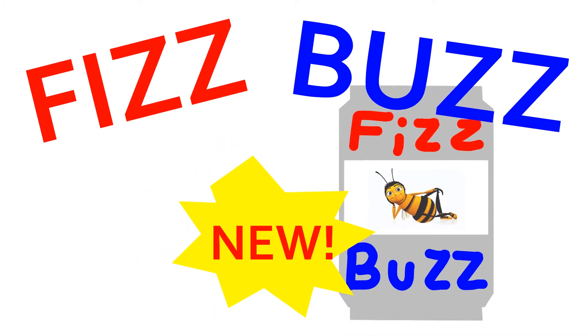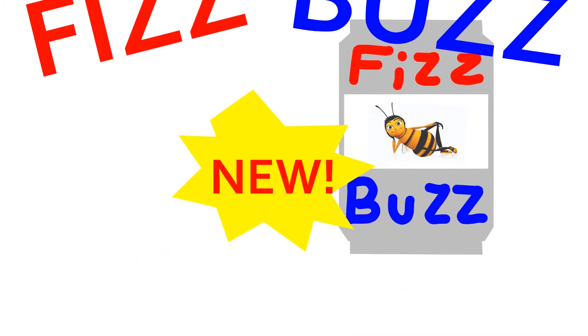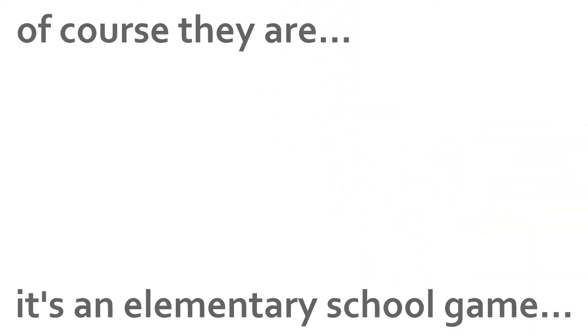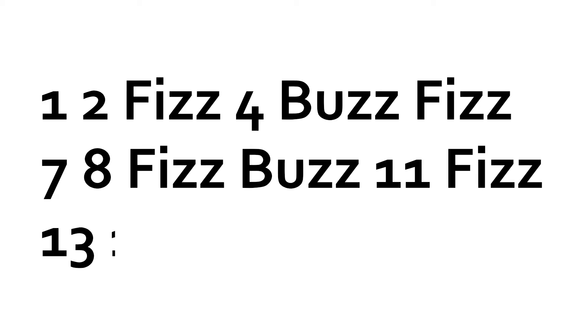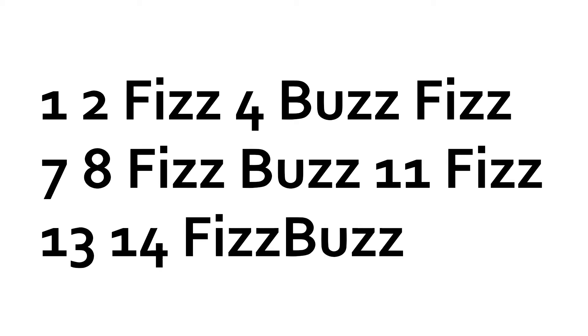While FizzBuzz sounds like a beef-flavored soda drink, it is actually a game meant to teach third graders about division. The rules are simple: start counting up by ones. If a number is divisible by three, replace it with fizz. If a number is divisible by five, replace it with buzz. If a number is divisible by both, replace it with fizzbuzz.